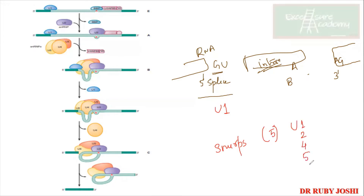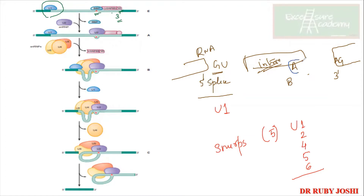There are five snRNPs, nomenclature given as U1, U2, U4, U5, and U6. At the 5' splice site U1 comes and interacts; at the branch site BBP — branch point binding protein — comes; and to the 3' side, U2AF 65/35 comes. U2AF 65 is the larger subunit interacting with the branch site, and 35 is the smaller subunit interacting with the 3' splice site.